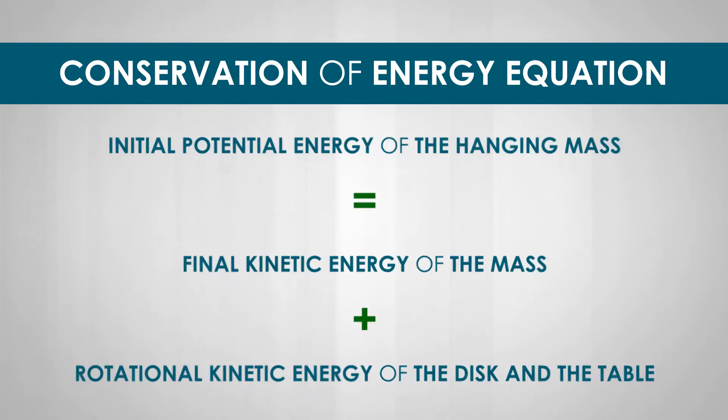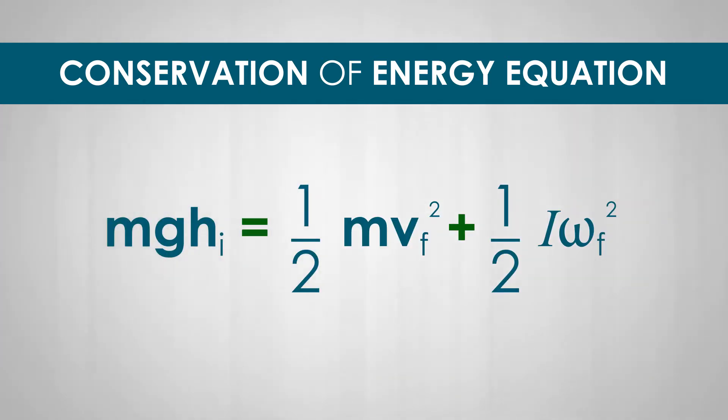Applying the law of conservation of energy, we can say that initial potential energy of the hanging mass equals final kinetic energy of the mass plus rotational kinetic energy of the disk and the table. In this case, the first term, Mgh, is the initial potential energy of the hanging mass. One-half mv squared is the final kinetic energy of the hanging mass just before it hits the ground.